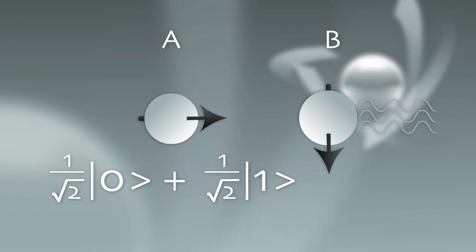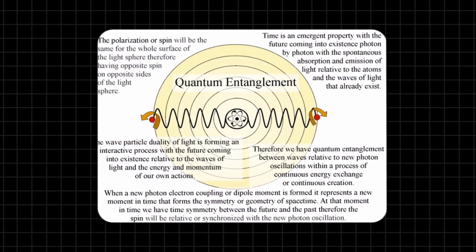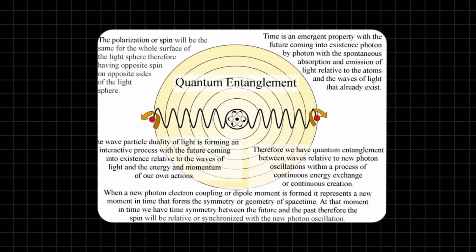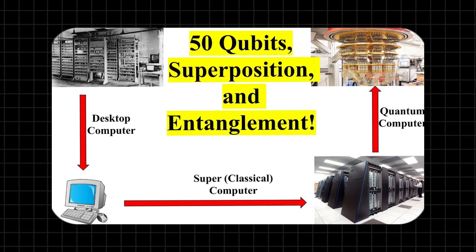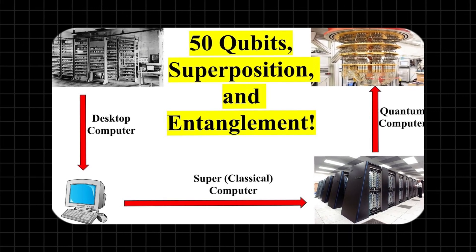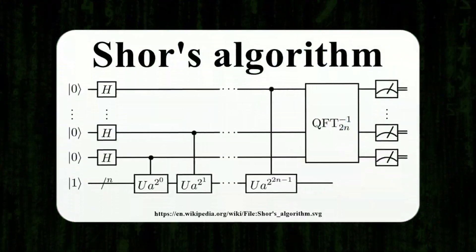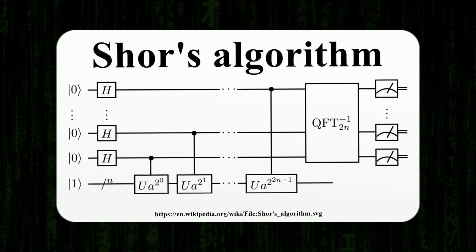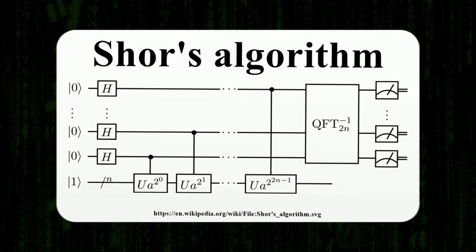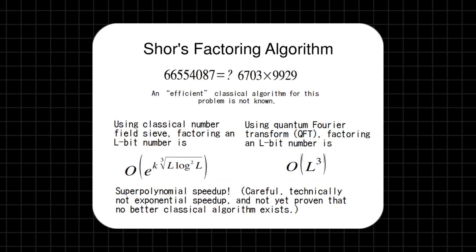Quantum gates manipulate qubits through operations that change their states in specific ways. These operations are the building blocks of a quantum algorithm, which is a set of instructions that tell the quantum computer how to solve a problem. Quantum algorithms, like Shor's algorithm for factoring large numbers, exploit the properties of qubits to solve problems much faster than classical algorithms. This could mean breaking encryption codes in minutes rather than years.